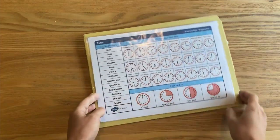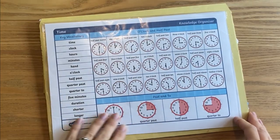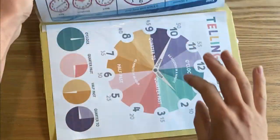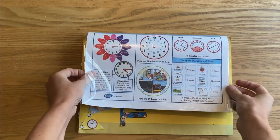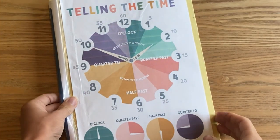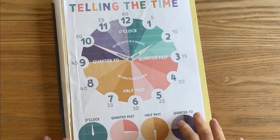On the back we've added a knowledge organizer to help remind us about telling the time. This is a nice Twinkle worksheet with a summary of what we're learning about. We've got another one on the other side as well, and there's also a poster from Twinkle on the back here.